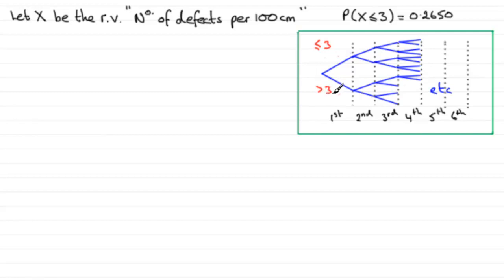Now in the previous part of the question, we worked out that if we had a plank that was 100 centimeters long, and we looked at the random variable X as the number of defects per 100 centimeters, we worked out the probability X was less than or equal to 3 to be 0.2650. So I can put this probability in here as being 0.2650.